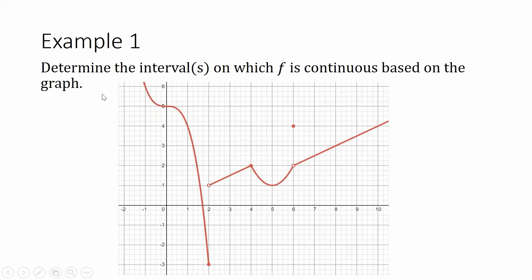As far as graphs of continuous functions go, we can look at graphs and visually see where things are continuous and where they are not. Take a look at this graph and let's try to determine the intervals on which f is continuous. On the left-hand side, the function looks continuous — at each point the limit exists and equals that value.